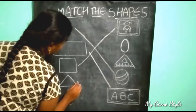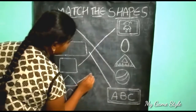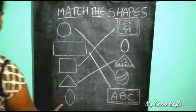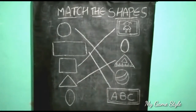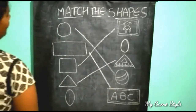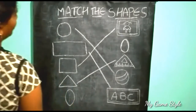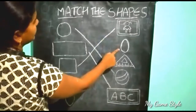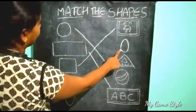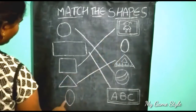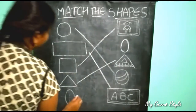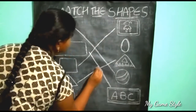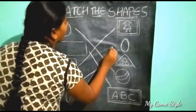So we need to match this. This is an Oval — which is similar to this? This is an Egg. Egg is similar to Oval, so we need to match this.